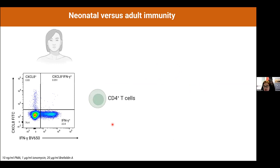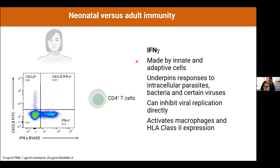Neonatal T cells and adult T cells are really not very similar. If you stimulate a CD4 T cell from an adult and look at cytokine production using flow cytometry, you see a large production of interferon gamma. This is an important cytokine that underpins responses to parasites, bacteria, and viruses — it can inhibit viral replication directly, activate macrophages, and upregulate HLA class II expression.